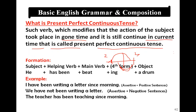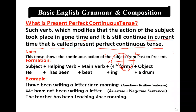We have formation and examples. Note that this tense shows the continuous action of the subject from past to present. The subject's continuous action starts in the past and carries on to the present. The formation is: Subject + Helping Verb + Main Verb (4th form / ING form) + Object. In Present Perfect Tense we used the third form of the verb, but here we will use the fourth form of the verb.